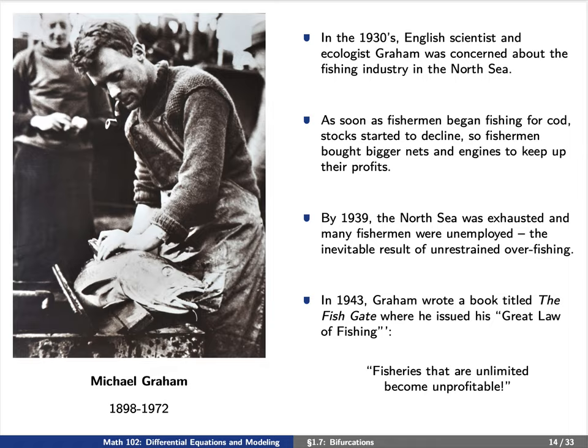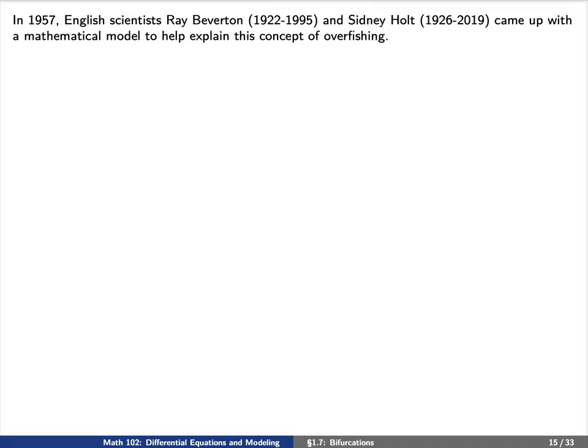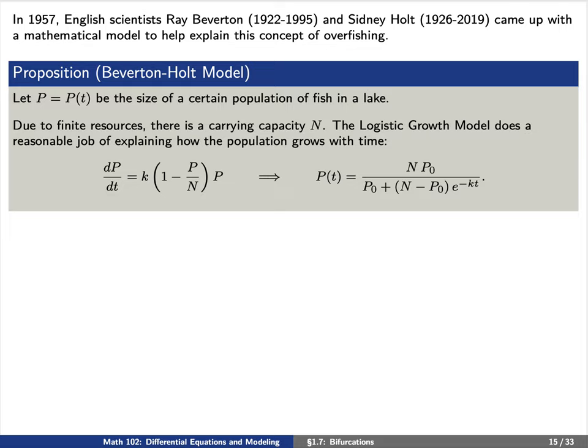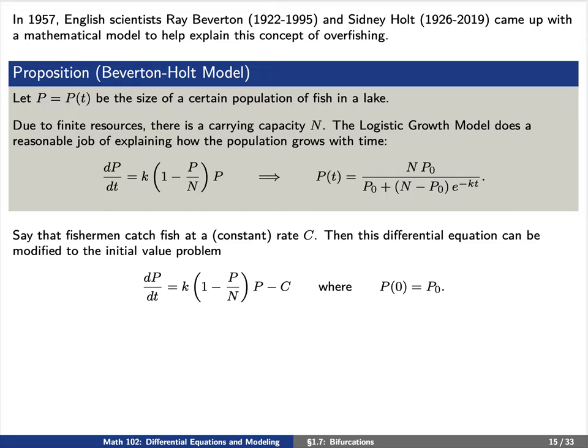A few years after that, two English scientists, Ray Beverton and Sidney Holt, came up with a mathematical model to explain this concept of overfishing. In the Beverton-Holt model, P(t) is the size of a population of fish. Since there are finite resources, there must be a carrying capacity N, and the logistic growth model does a reasonable job of explaining how the population grows with time. Adding a constant catch rate C, our modified logistic model becomes: dP/dt = K(1 − P/N)P − C.